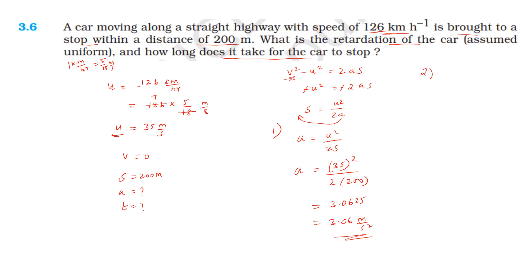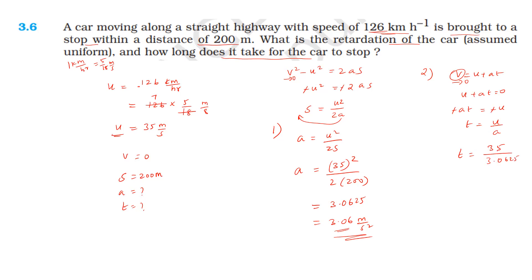To find how long it takes to stop, we use v = u + at = 0, so at = minus u. Since both a and u carry negative signs, they cancel. t = u/a = 35/3.0625, which gives the answer as 11.4 seconds.